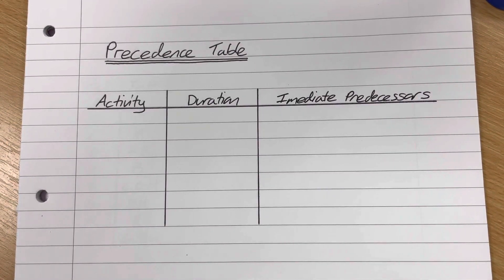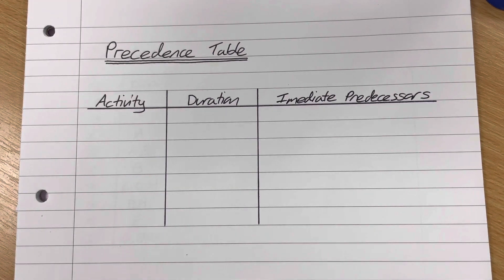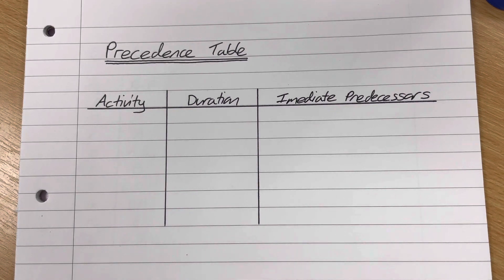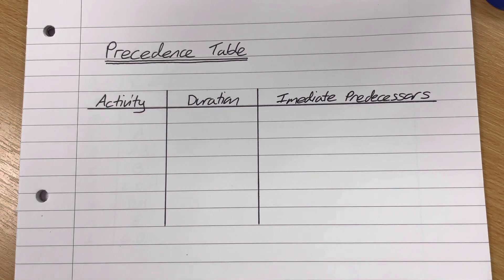Quite often in critical path analysis questions, you will be required to draw an activity-on-arc network from a precedence table. A precedence table is a table which represents all of the activities of the project and tells you what needs to immediately precede it.